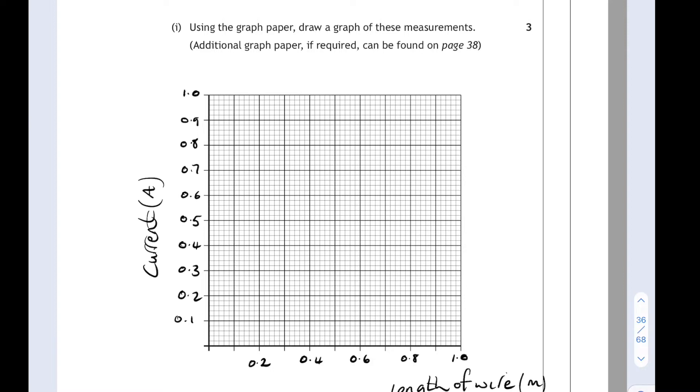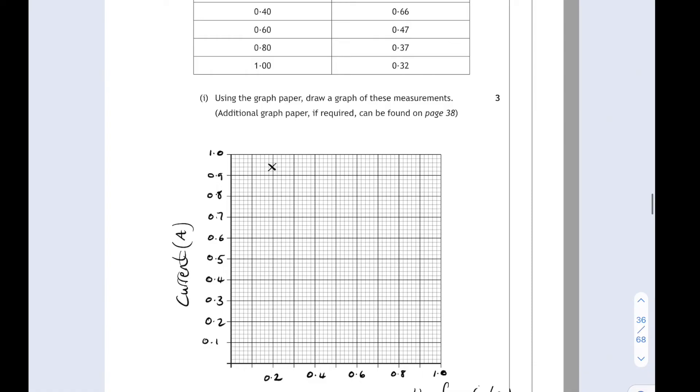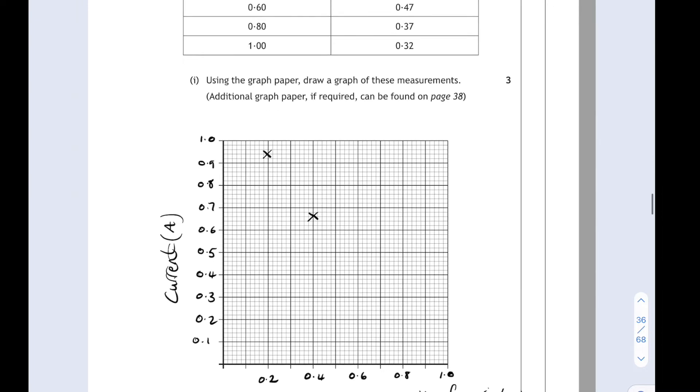Then we can start plotting our points. Be careful to make sure your points are plotted correctly to within half a box. We call that half box tolerance. Our first point at 0.2 meters, we have a current of 0.94 amps. Our second point, when the length was 0.4 meters, the current was 0.66 amps. Our third point, the length was 0.6 and the current was 0.47.